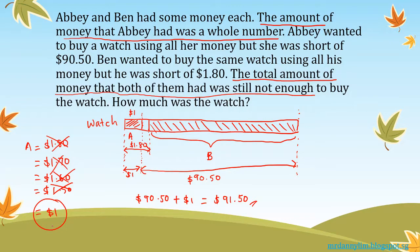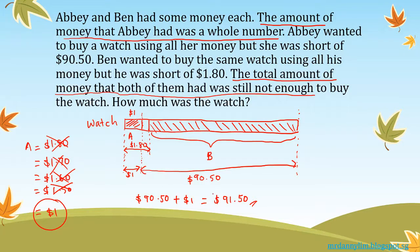Two things to highlight: Number one, determine whether to draw one bar or two bars — in this case it's one bar because it's part-part-whole; we have the parts and not the whole, and the watch is the whole. Number two, after identifying that Abby must have less than $1.80, because it must also be a whole number, it cannot be $0.50 or $0.30 — from $0.10 all the way to $1.70, the only whole number is one dollar. That is why this is the answer.